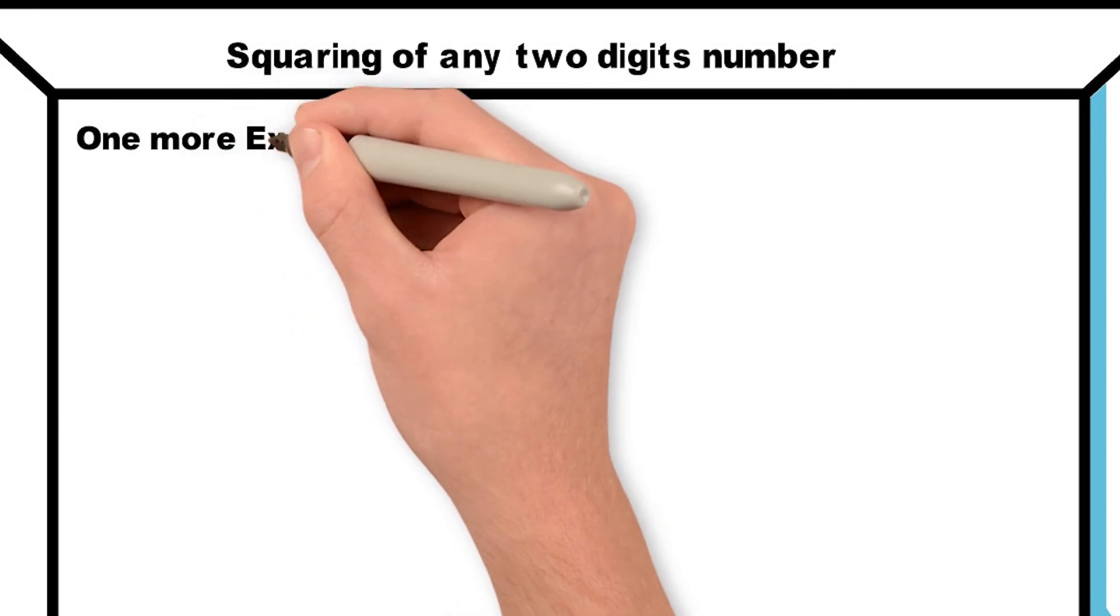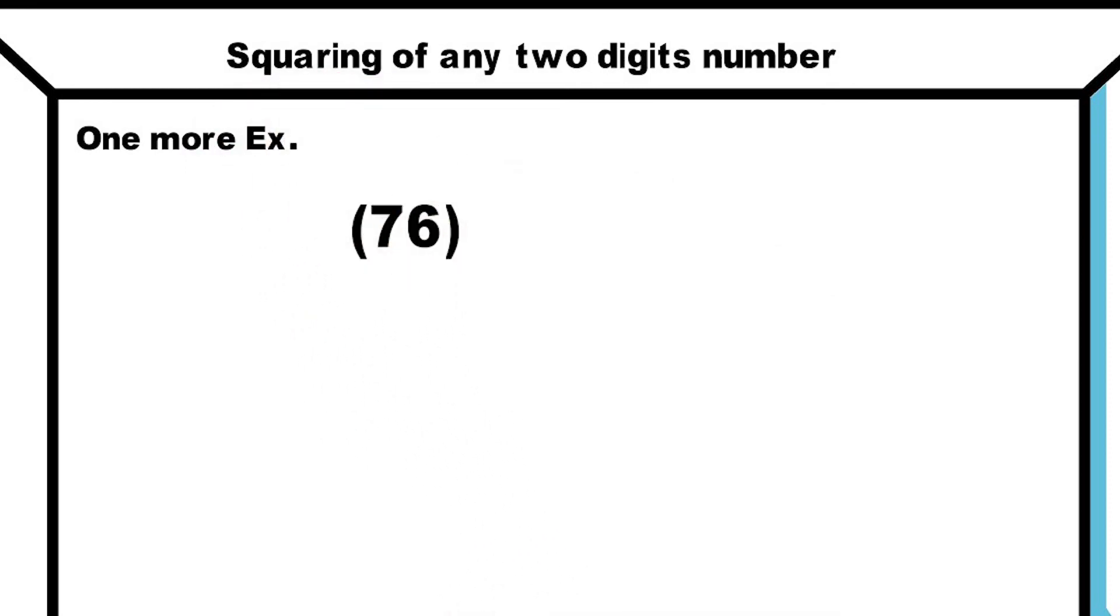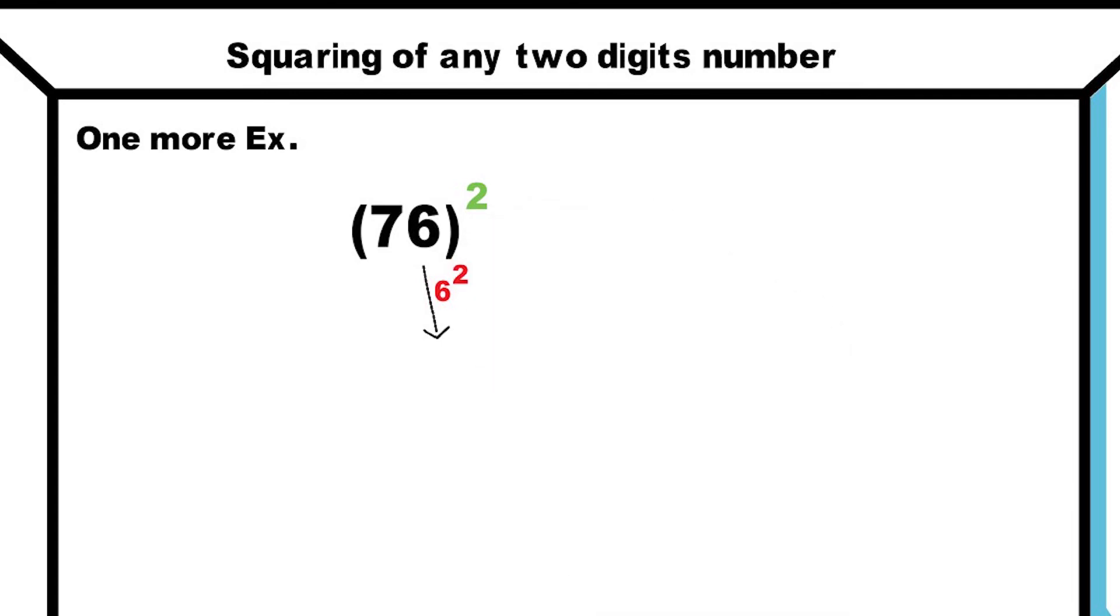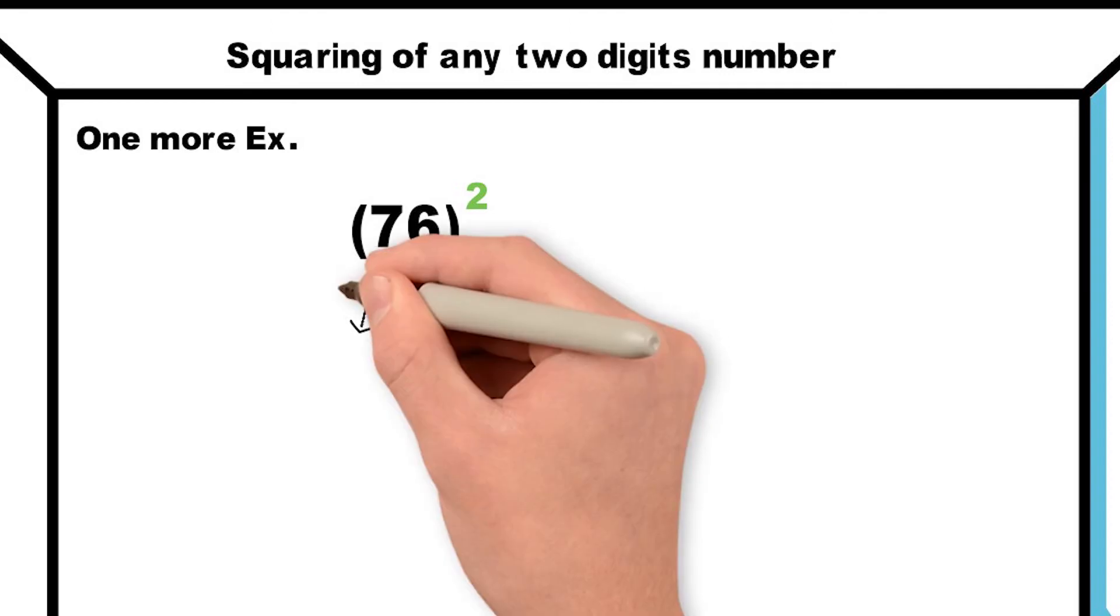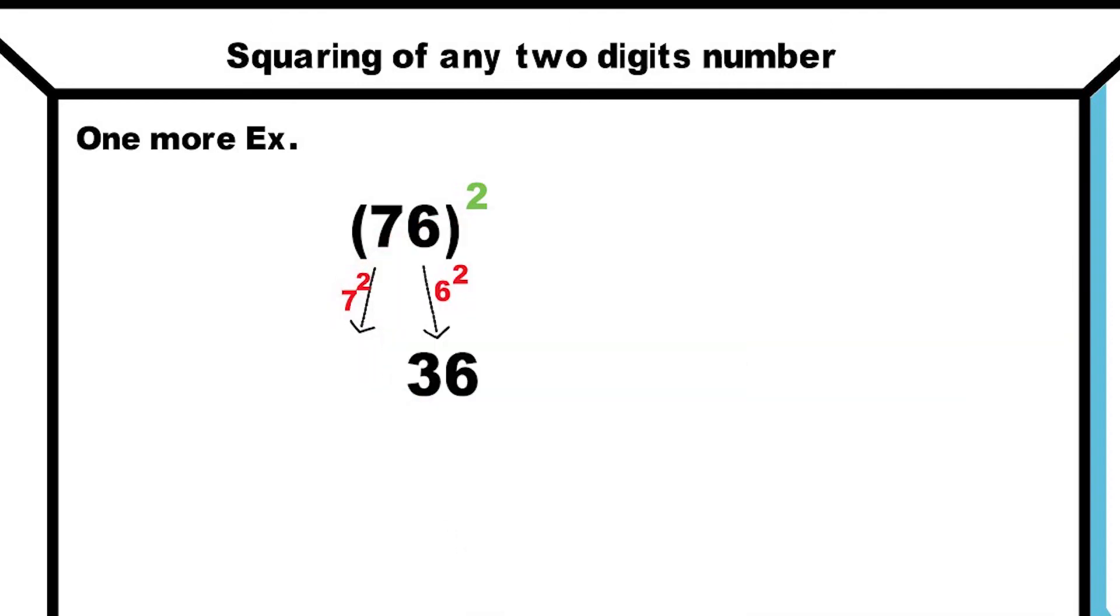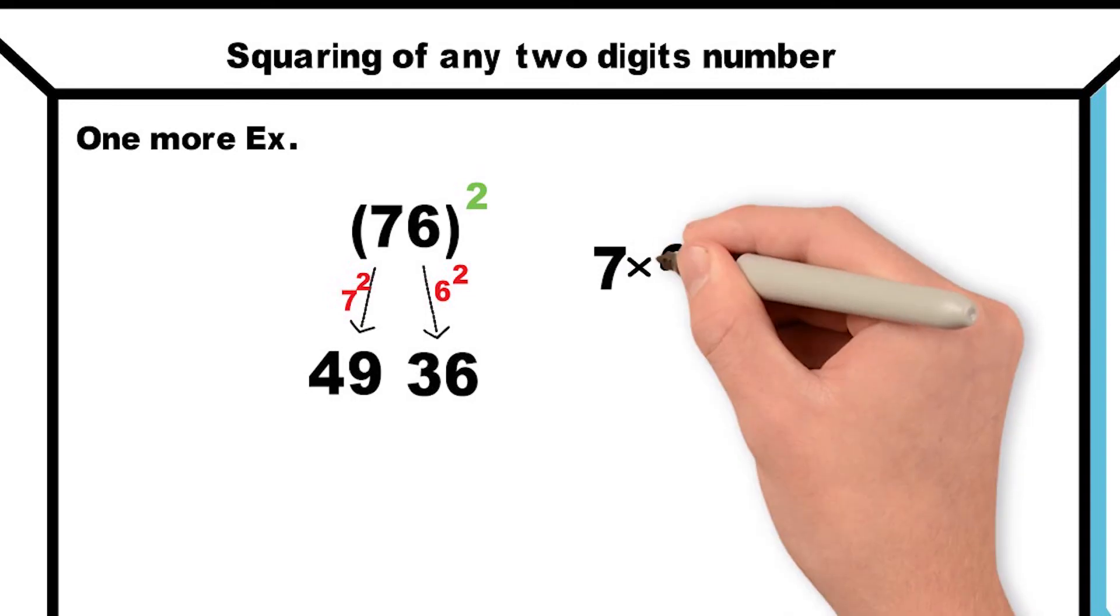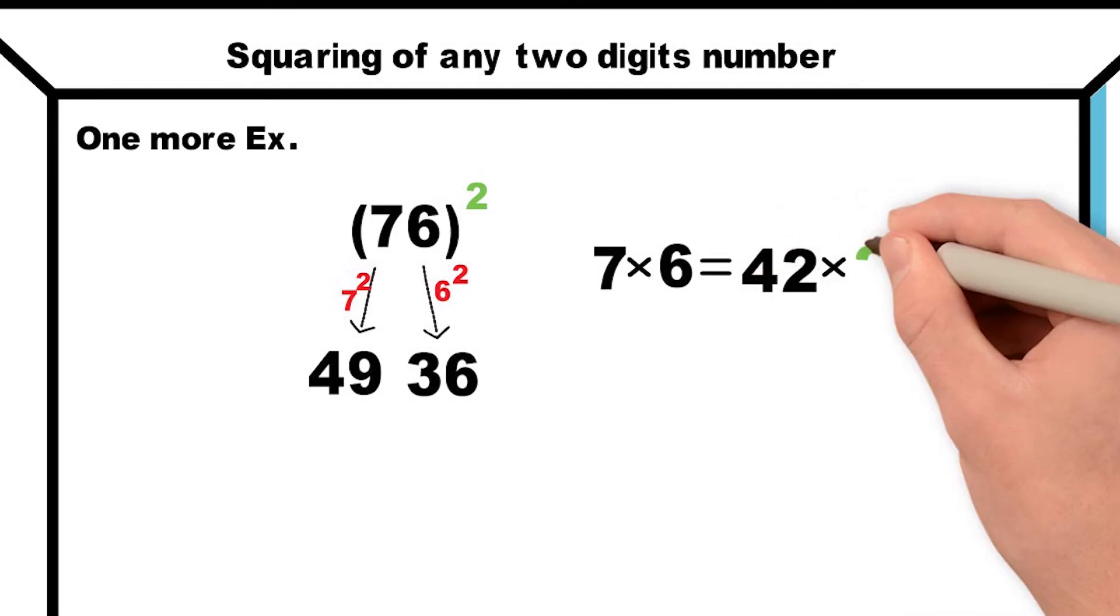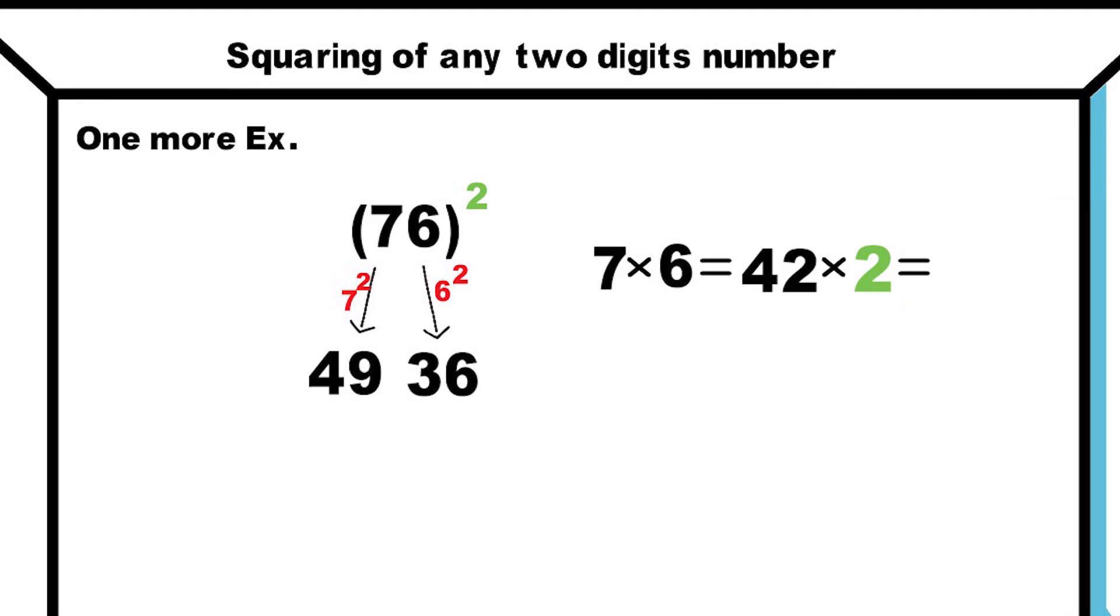Let's take one more example: 76 whole square. Squaring of unit place digit: 6 square is 36. Squaring of tens place digit: 7 square is 49. Now multiply the digits of our question: 7 into 6 is 42. After that, double this 42, which is 84.